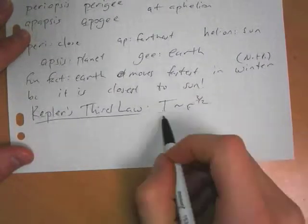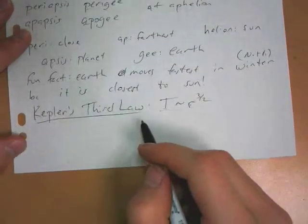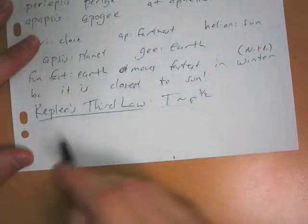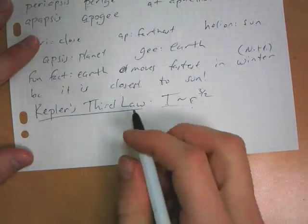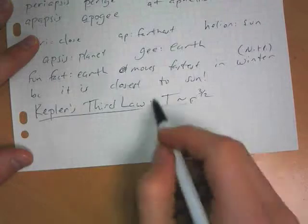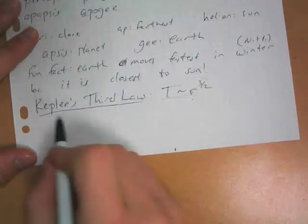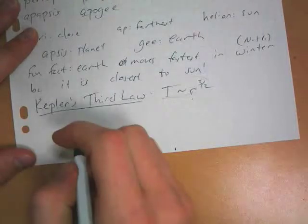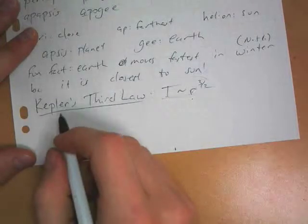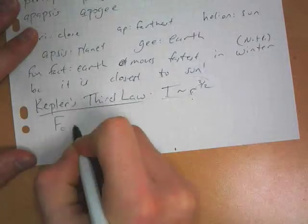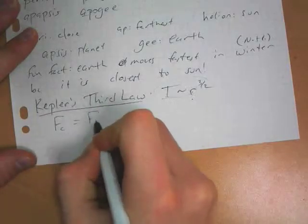So he decided that period was proportional to radius to the three-halves. And Newton, through Newton's laws, we were able to get a more accurate figure out what the proportionality was. If we consider it to be a circular orbit, more or less, it doesn't have to be quite circular, but the centripetal force is caused by the gravitational force.